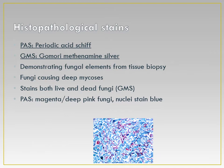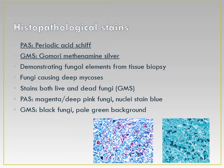PAS stains only live fungi and is the recommended stain for fungal detection, where fungi appear magenta or deep pink and the nucleus is stained blue. In GMS, fungus appears black against a pale green background. Both can be seen in the picture — the first is the PAS stain and the second is the GMS stain.